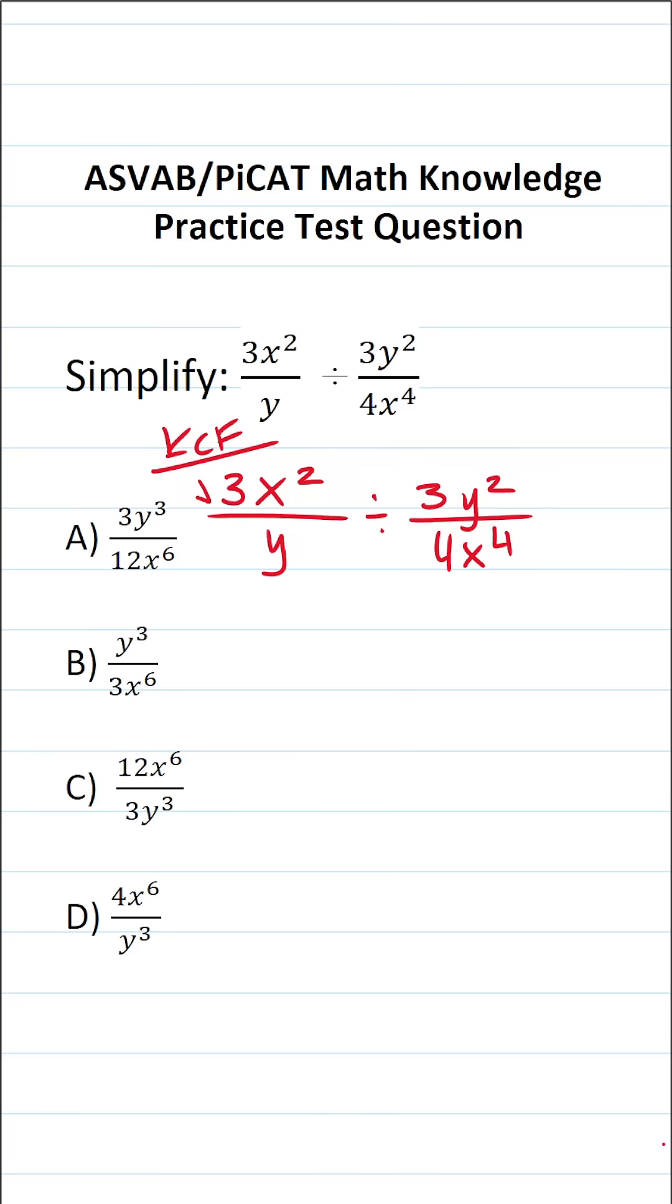That is to say we're going to keep this first fraction the same, so this is going to stay as 3x squared over y. We're going to change from division to multiplication and then we're going to flip this second fraction. So instead of being 3y squared over 4x to the fourth, it's going to become 4x to the fourth over 3y squared.